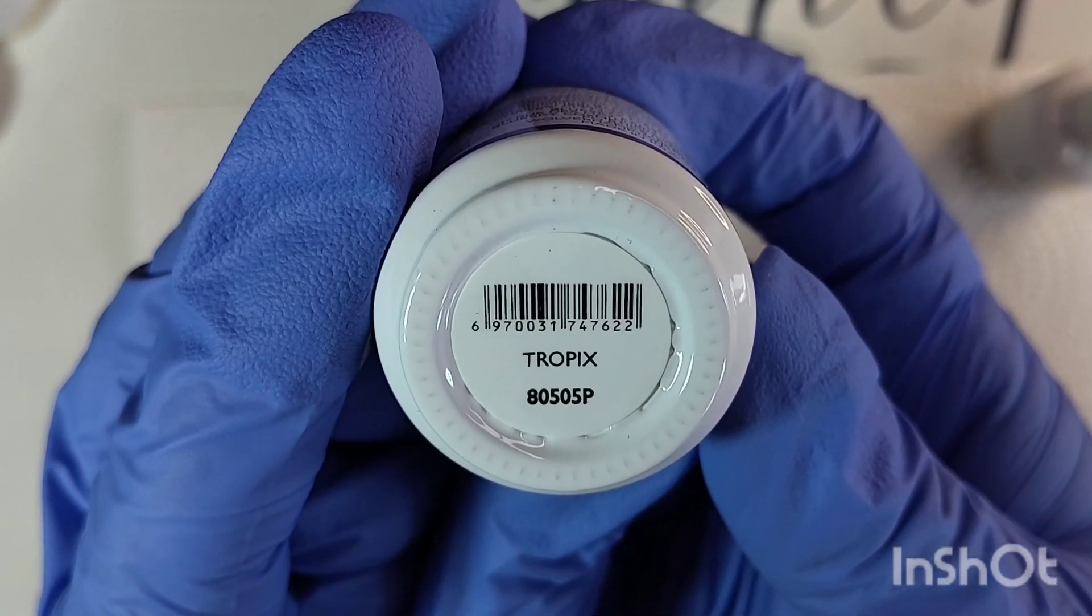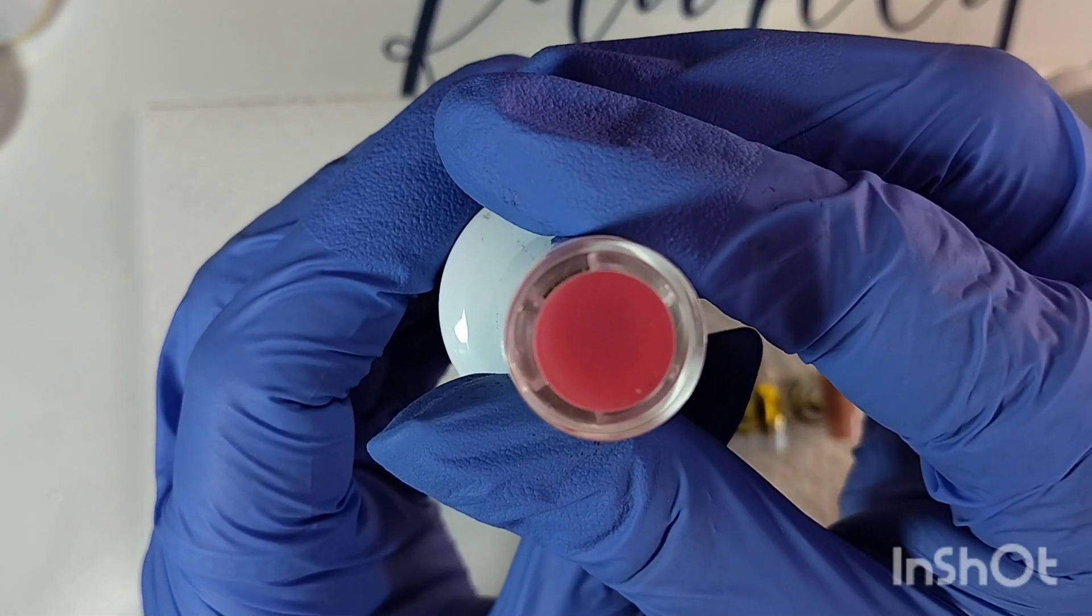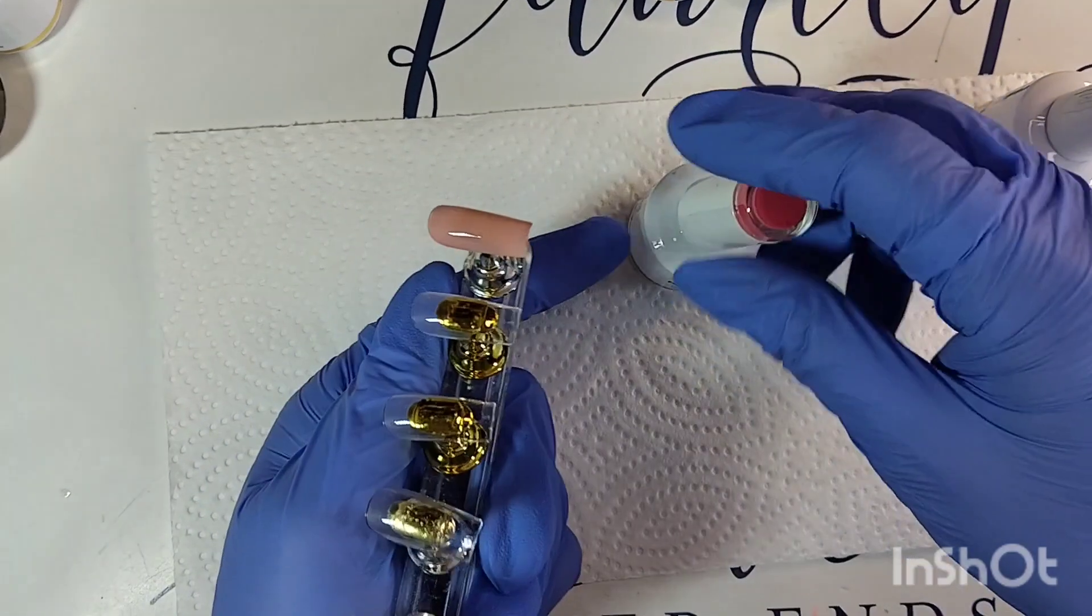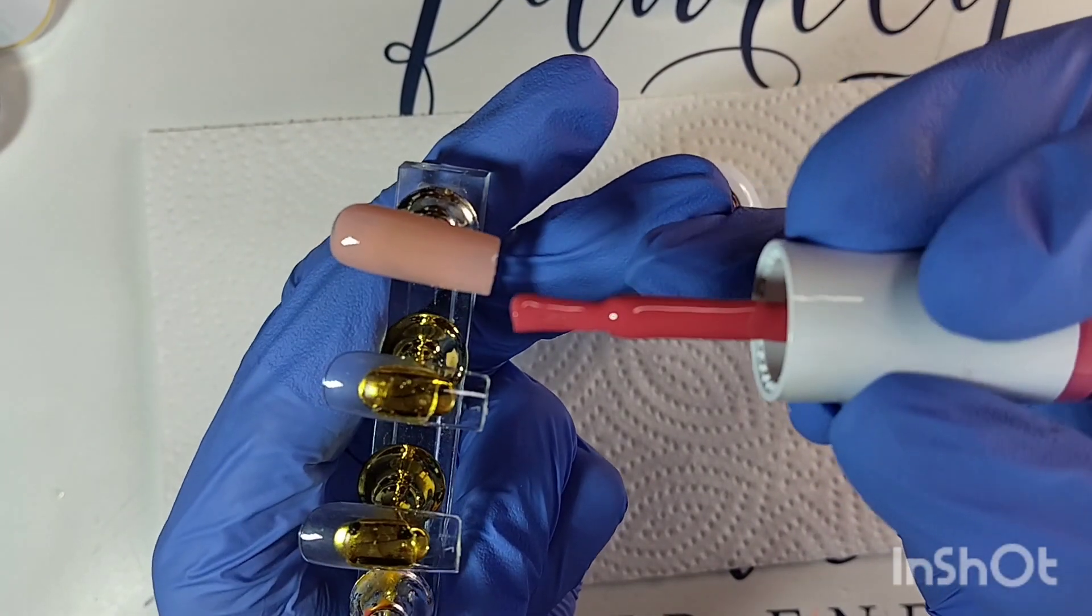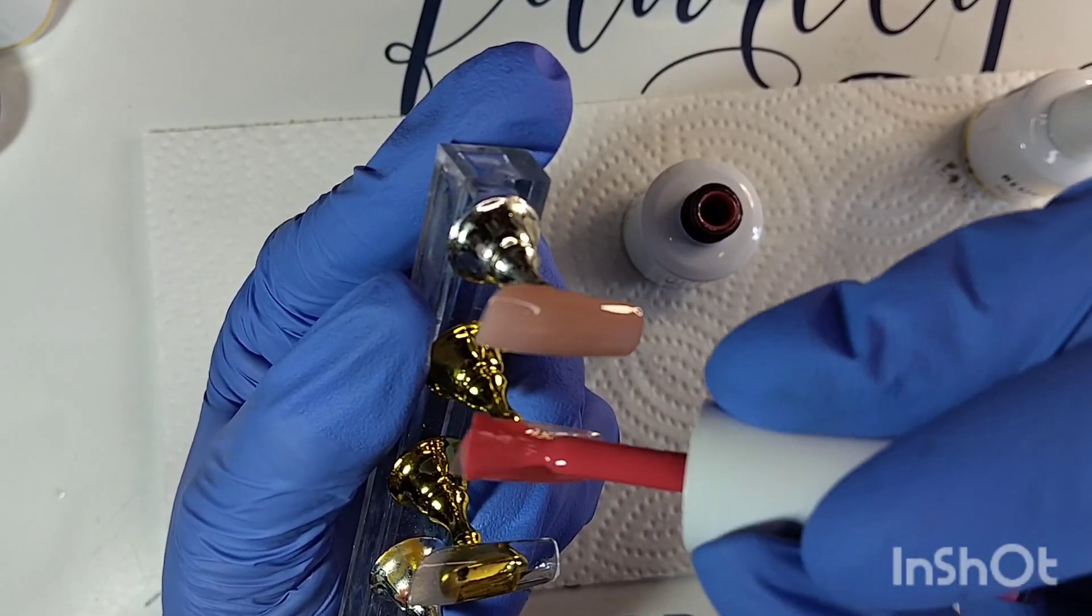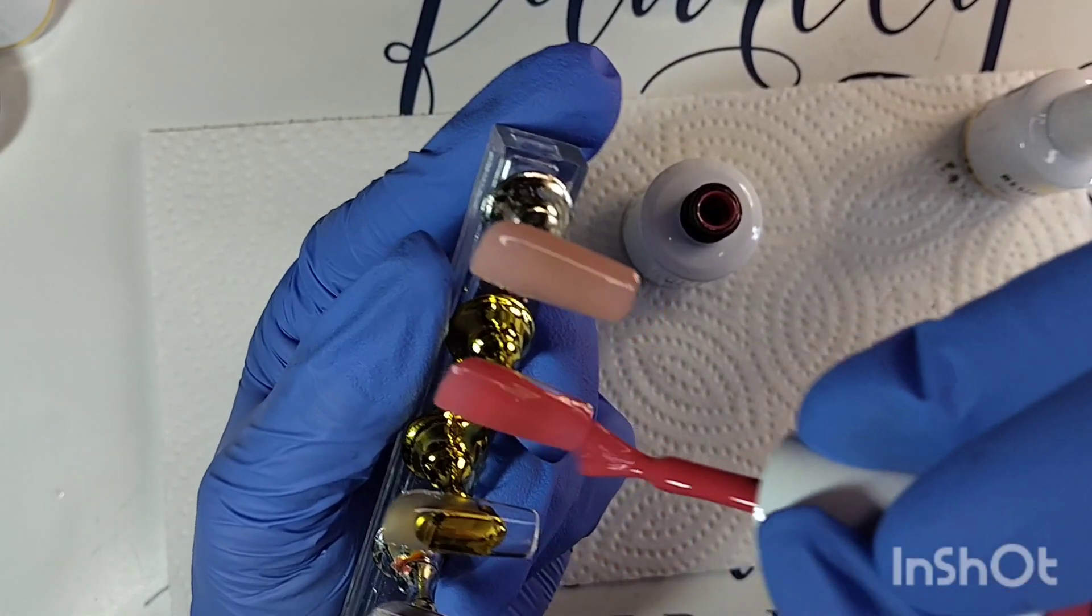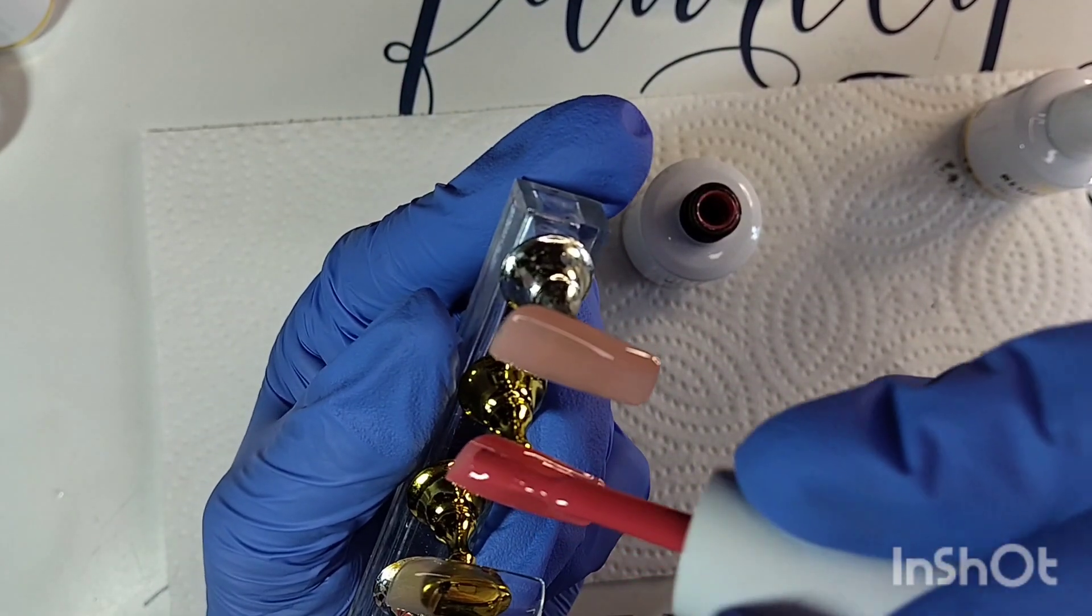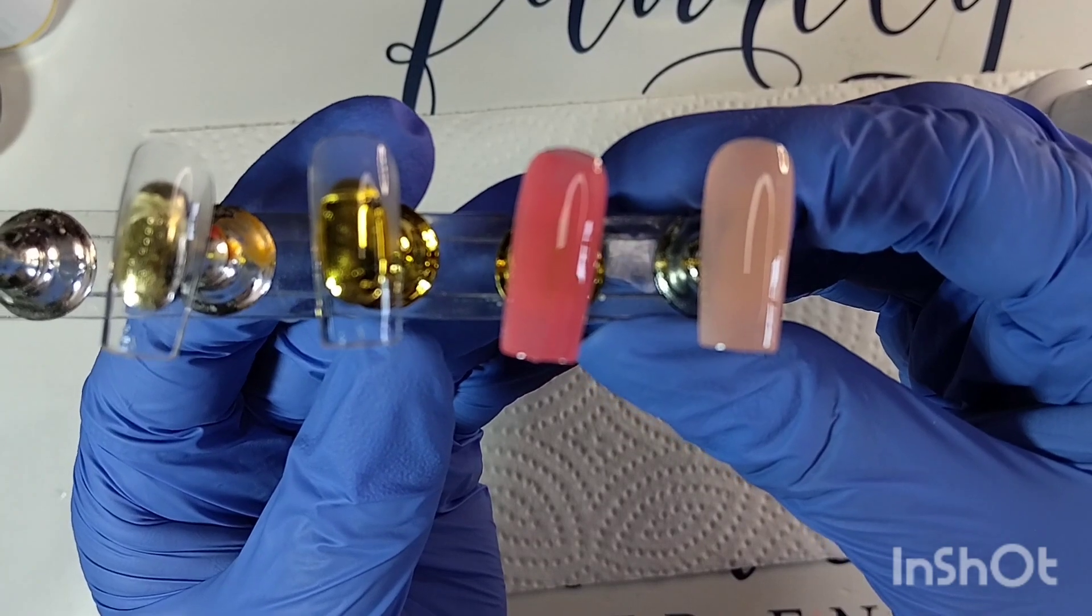Next we have Tropics. It is a pink color, very pretty. That is really pretty. It's almost like a dark peach mauvy color, very very pretty. Like I said, I only put very thin coats on these so they don't wrinkle in the lamp. That is what that color looks like.